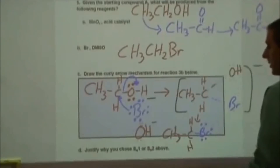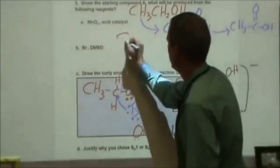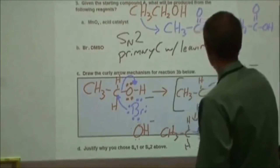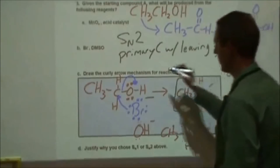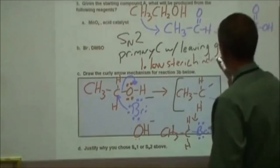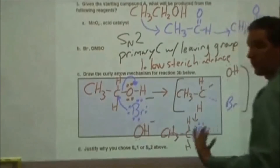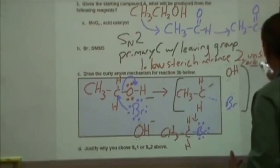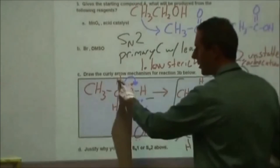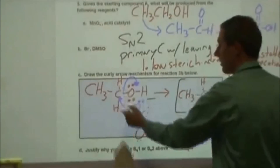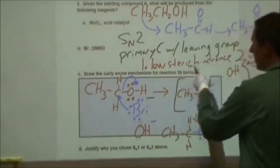In Part D it says justify why you chose SN1 or SN2. I picked SN2 because there is a primary carbon with a leaving group — the hydroxyl group — and that does two things. First, it gives you low steric hindrance to the SN2 mechanism, meaning there's not a lot of bulk to get in the way — the two hydrogens are not going to block the bromide from colliding with that carbon. Second, you have a very unstable carbocation intermediate for a primary carbon because you have a positive charge without much electron density nearby to stabilize it, so that's going to slow down the SN1 reaction and SN2 will dominate.